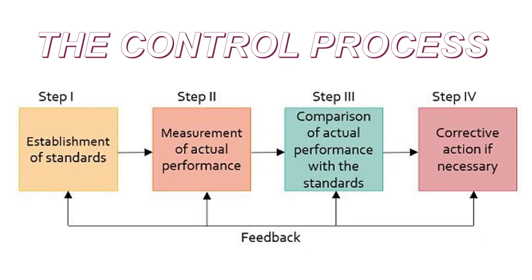There are four general steps in the control process. We need to establish standards, then measure performance against those standards, then compare our performance to those standards, and then take any corrective actions that are necessary. Once again, we have that continuous feedback loop that must exist in our processes.